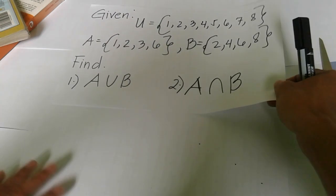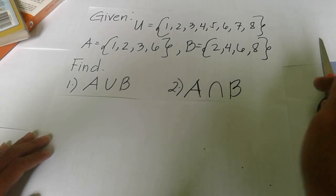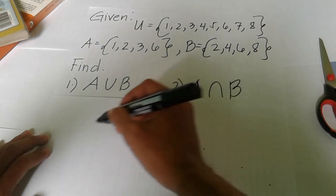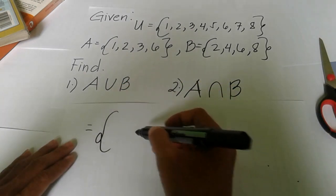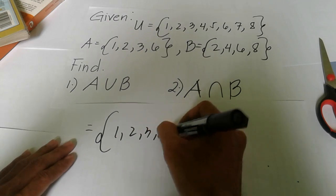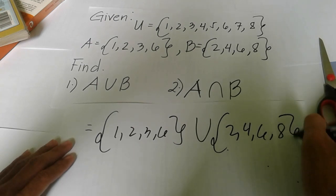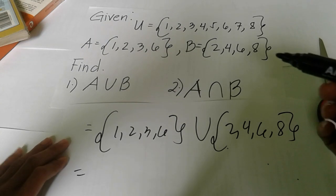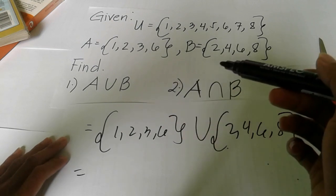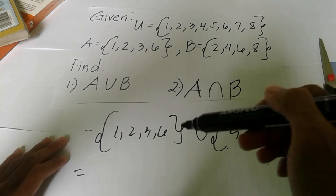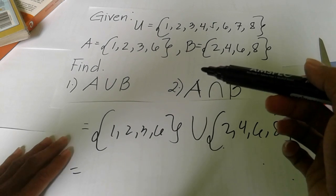Let's start with union. We take all the elements of A — which are 1, 2, 3, 6 — then union operation with 2, 4, 6, and 8. As the concept of the union of sets states: the union of two sets A and B is the set of elements which are present in A or present in B, or both. That means all the elements in A and in B. We write common elements only once.